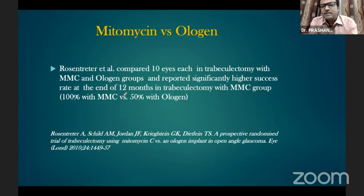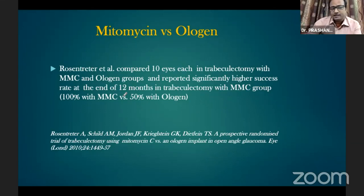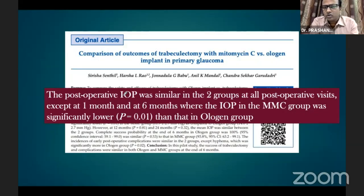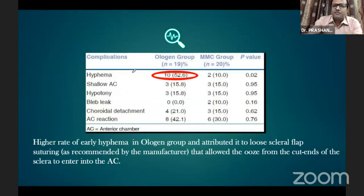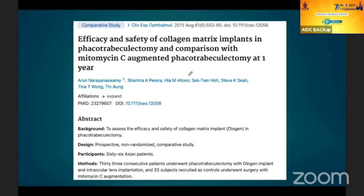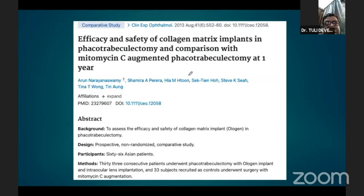There are many studies comparing mitomycin versus ologen. A study by Rosentreter compared trabeculectomy with mitomycin versus ologen and found that mitomycin had better intraocular pressure control over 10 years. Another study from L.V. Prasad — a prospective randomized controlled trial comparing trabeculectomy with mitomycin versus ologen — found that at 1 month, 6 months, and 12 months, IOP control was better with mitomycin. In long-term follow-up, control was similar in both groups. The incidence of hyphema was more with the ologen implant because the company recommends placing the flap sutures loosely. So there is a high chance of hyphema after putting this implant.